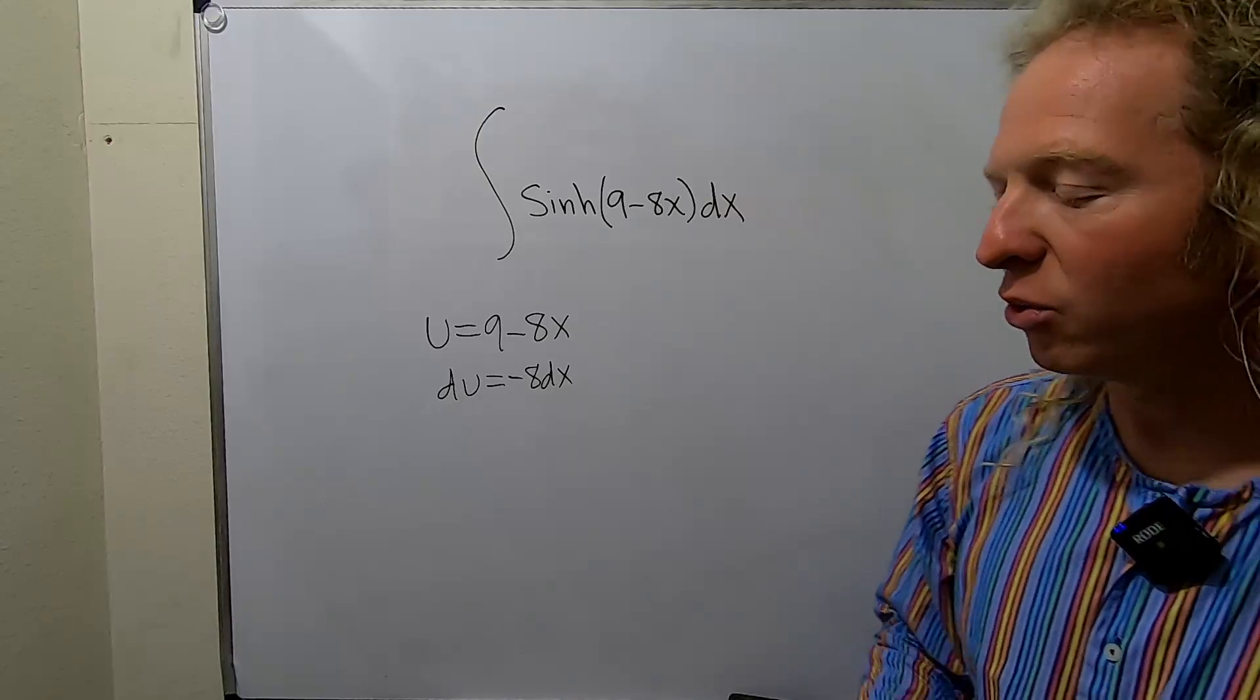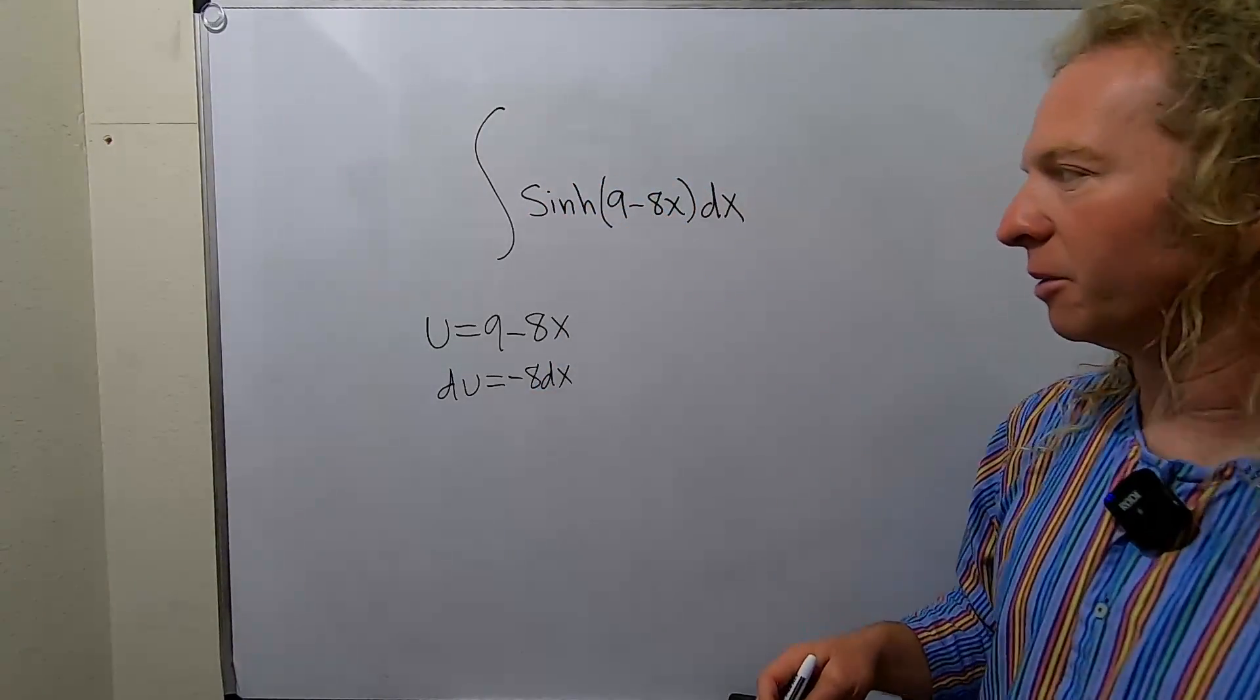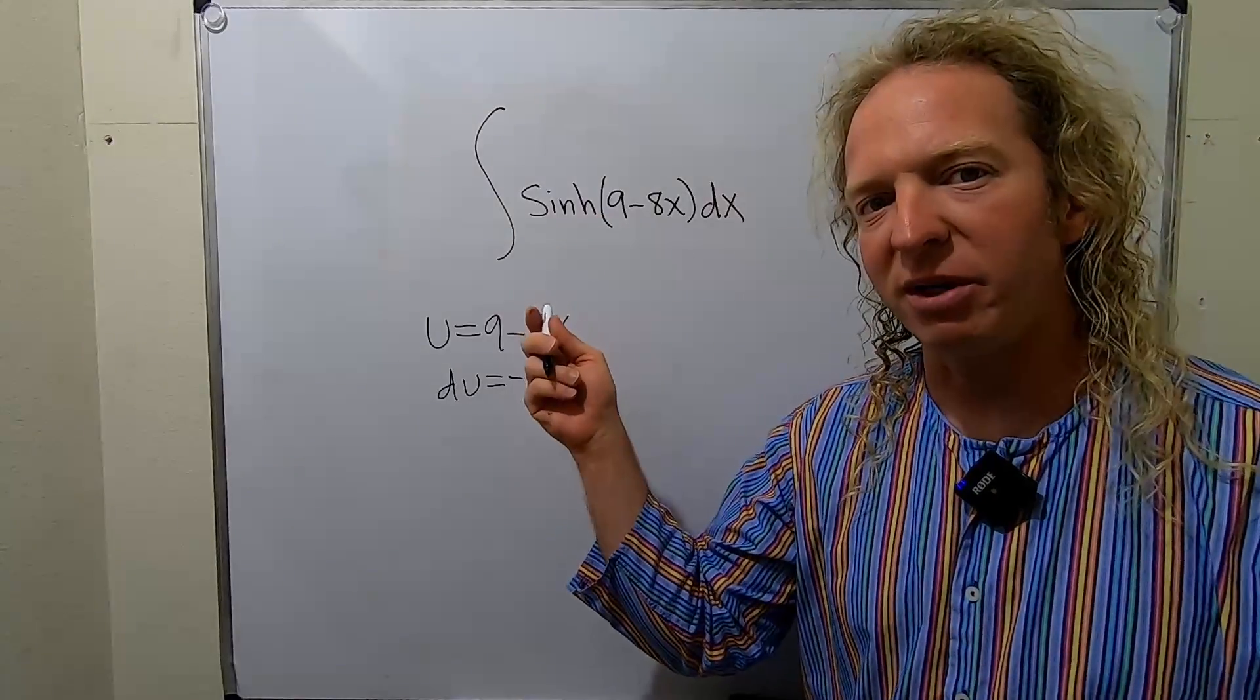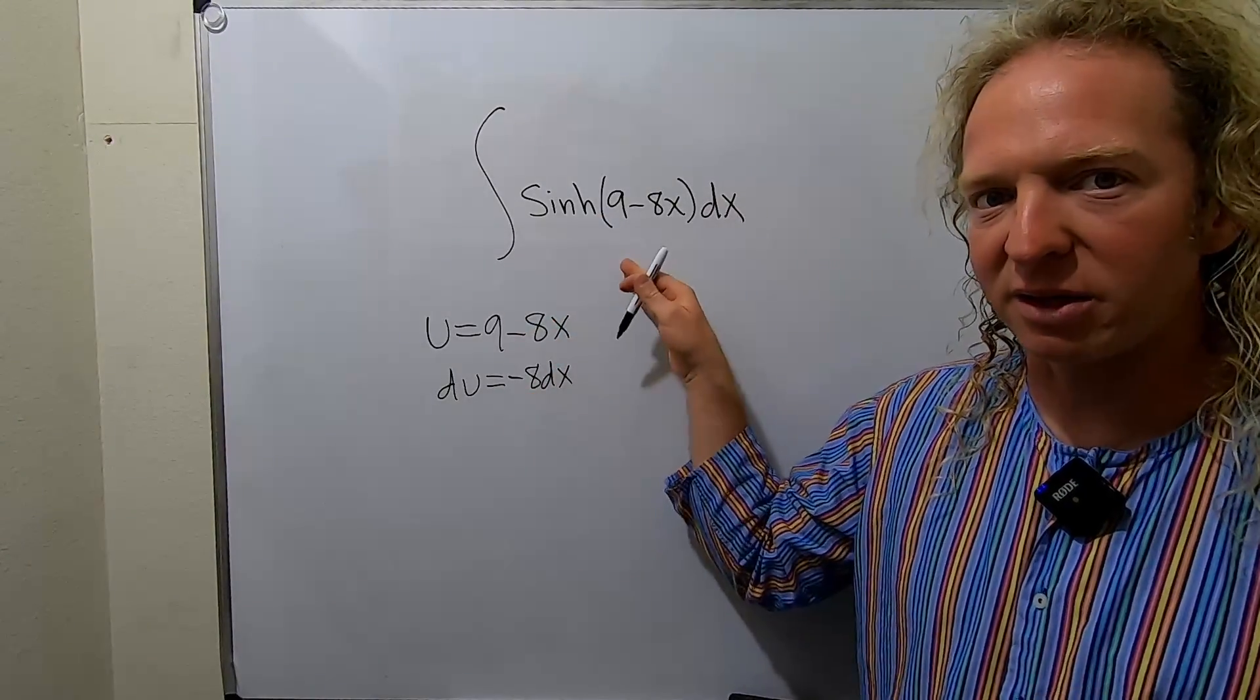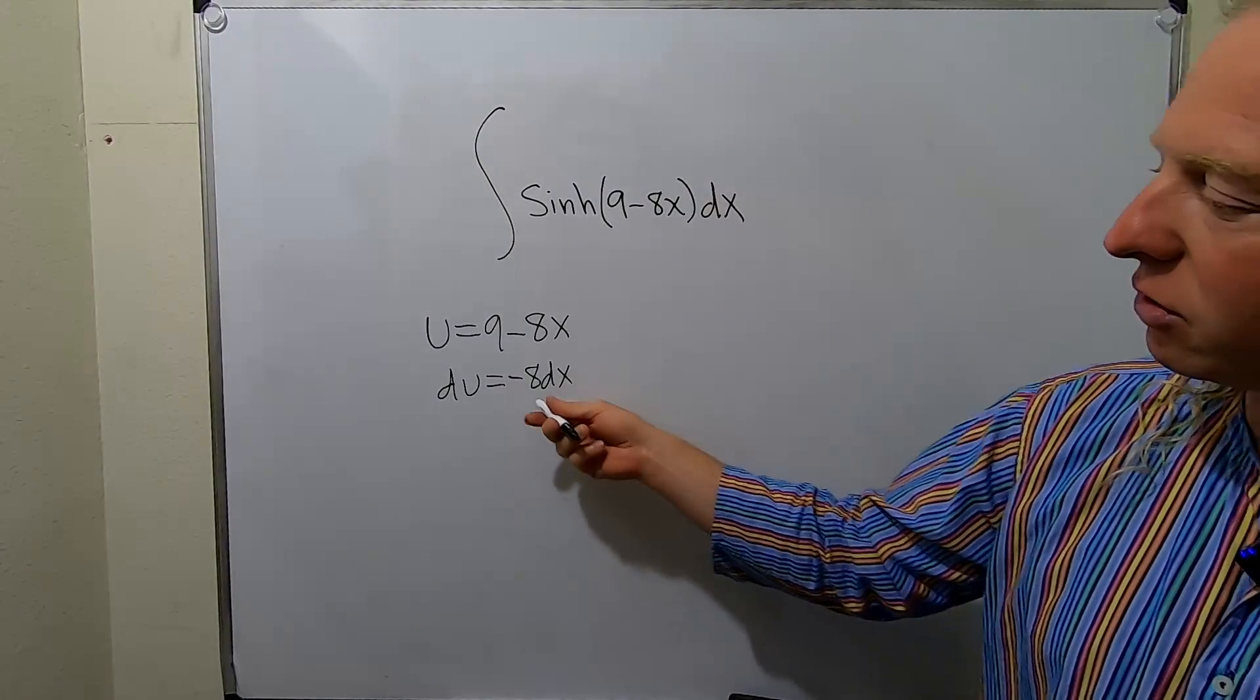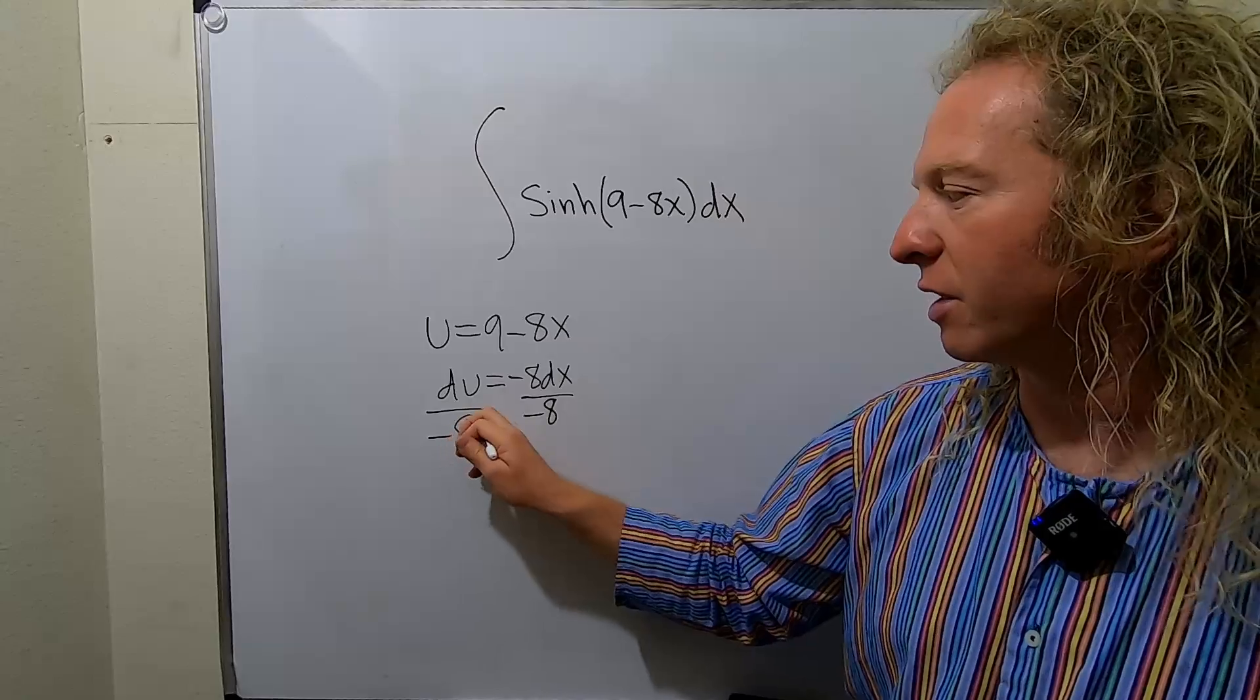Now when you get to this point, you want to make this look like what's up here. You'll notice you don't have a negative 8 up here, so you manipulate this to make it look like this. It's a really key idea. All we'll do is divide by negative 8. Beautiful stuff.